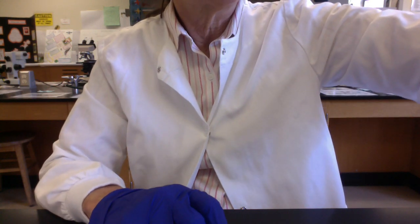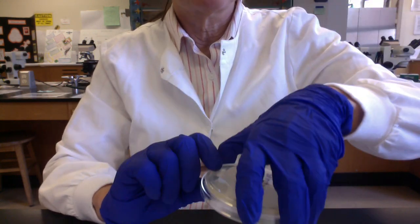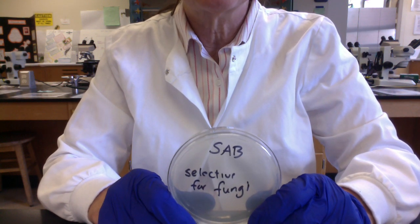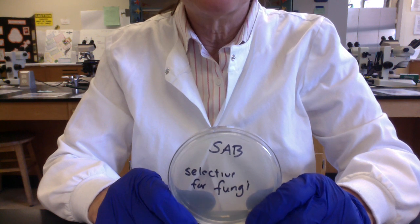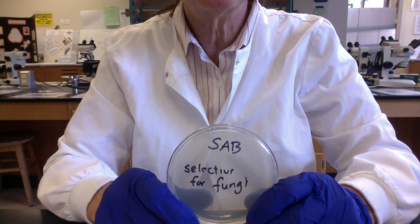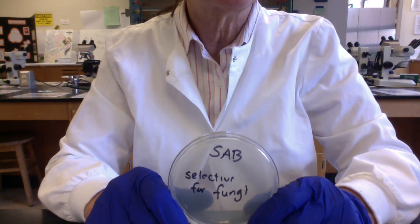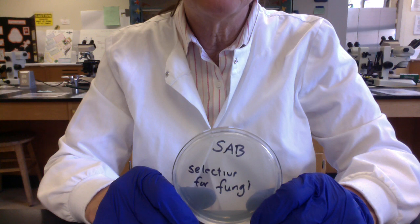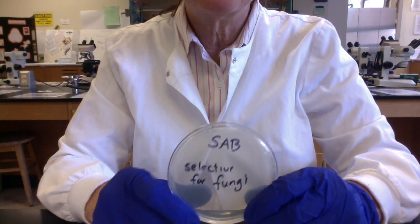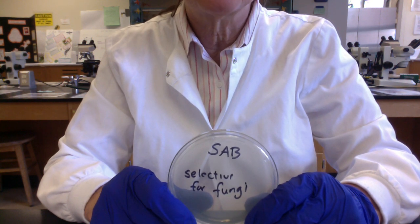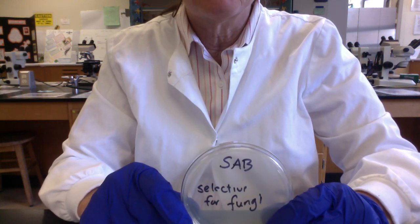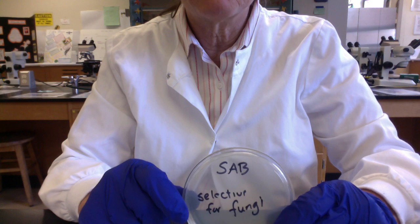Then also in the airborne experiment, we'll be using Sabouraud's dextrose medium. This medium is called selective for fungi, and it's because it has a really high sugar concentration, high glucose dextrose concentration, and also it's been acidified. So most environmental bacteria don't grow well at low pHs, but in general, fungi can grow better at low pH. So by adding excess sugar, by lowering the pH, we're going to select for fungi. Select means we're going to permit them to grow, and then we'll inhibit, we'll stop the growth of most bacteria.